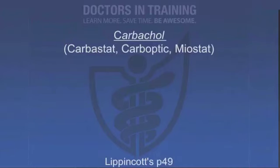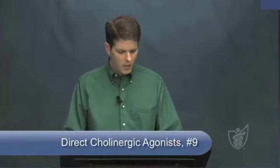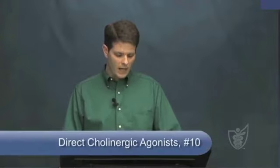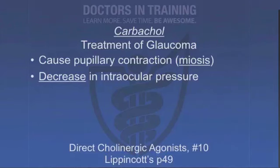Our next drug is carbacol — another 'col' drug, so it's also cholinergic. Unlike bethanacol, it acts at both muscarinic and nicotinic receptors. Like bethanacol, it is not inactivated by acetylcholinesterase and lasts about an hour. Given systemically, it affects the GI and cardiovascular systems and can cause release of epinephrine from the adrenal medulla via its nicotinic action, raising blood pressure and heart rate — so we don't usually give it systemically. We do give it locally as an eye drop, where it causes miosis and pupillary constriction. Therapeutically, it's used to treat glaucoma: carbacol eye drops cause pupillary contraction and a decrease in intraocular pressure. It has essentially no adverse effects when used in very small doses as an eye drop, as it is not well absorbed systemically.